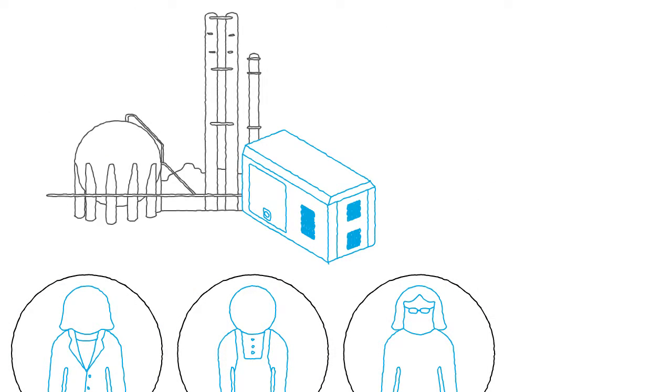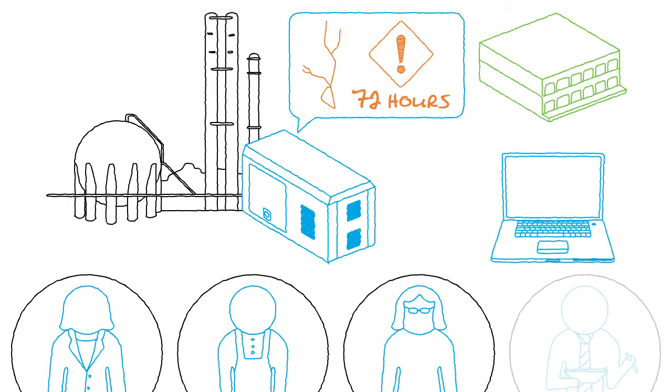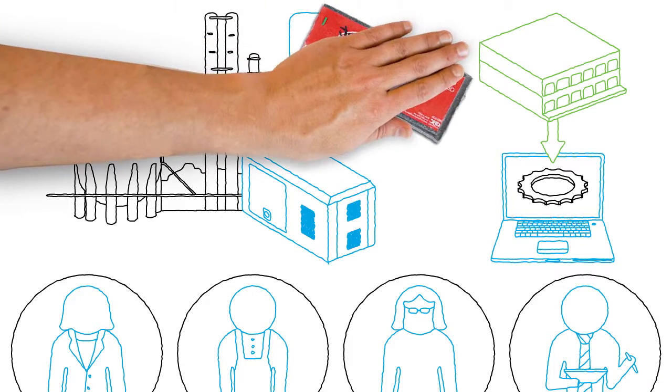A diesel generator at an oil refinery detects a crack in a component. The crack will cause the generator to fail in approximately 72 hours. The generator sends an alert to the generator's manufacturer, the refinery's purchasing system, and Lars, the refinery's maintenance engineer. The purchasing system automatically orders the replacement part from the manufacturer. When it arrives, Lars fixes the generator before it fails.